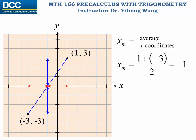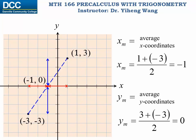And also it should have a y coordinate that is the average value of the y coordinates of the two given points as well. Therefore the coordinates of this midpoint is ((1+(-3))/2, (3+(-3))/2).